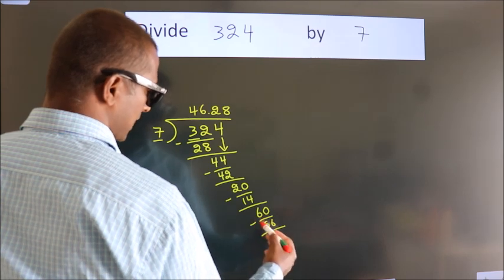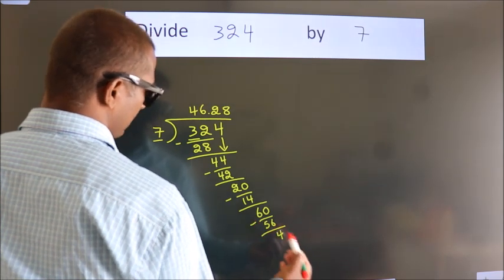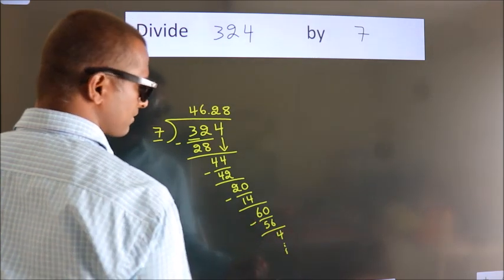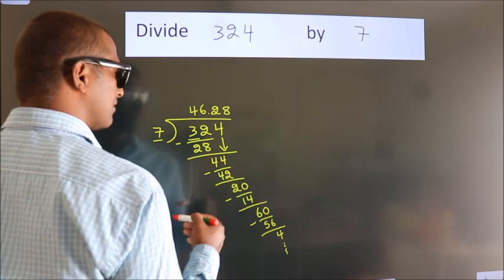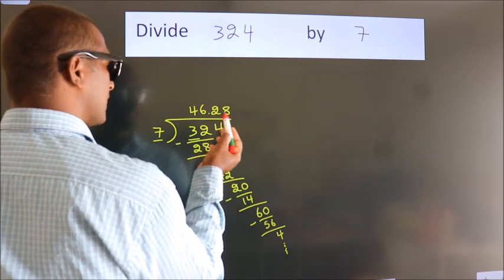Now, we subtract. We get 4. And the division continues. It is enough if we do up to 2 decimal places.